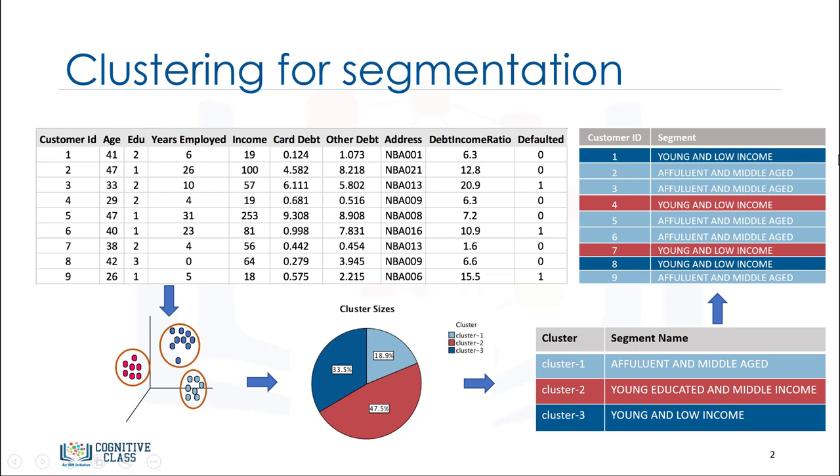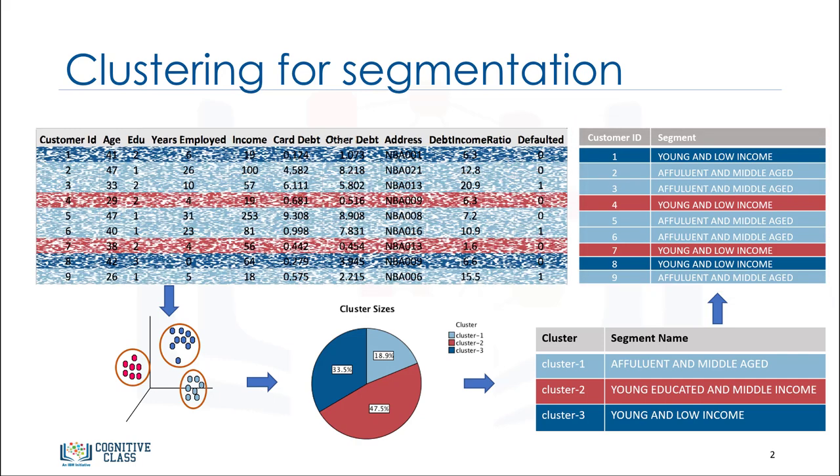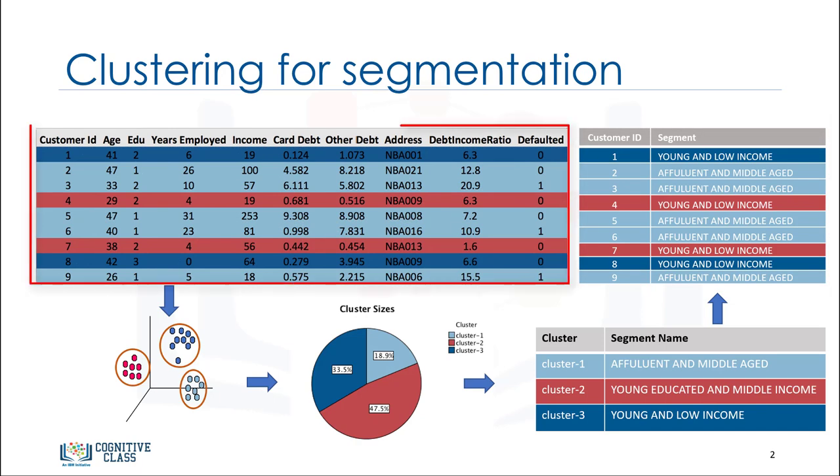Finally, we can assign each individual in our dataset to one of these groups or segments of customers. Now imagine that you cross-join this segmented dataset with the dataset of the products or services that customers purchase from your company.